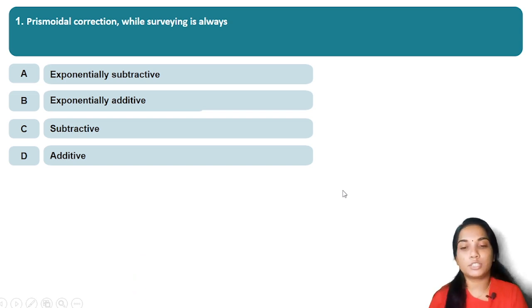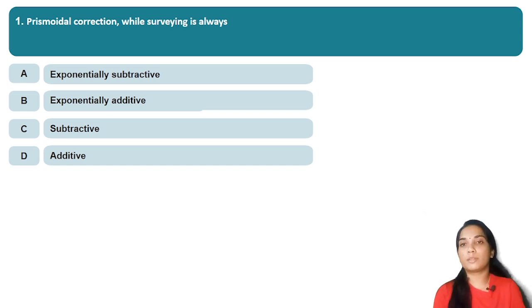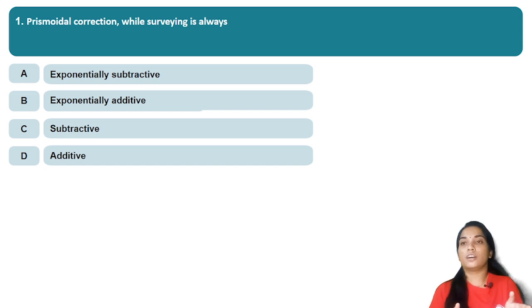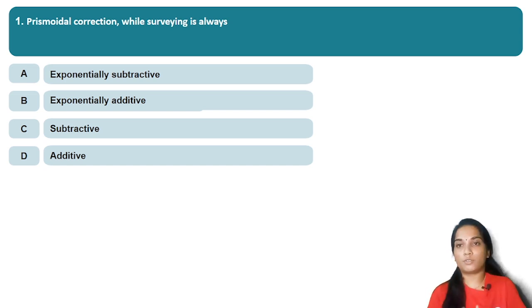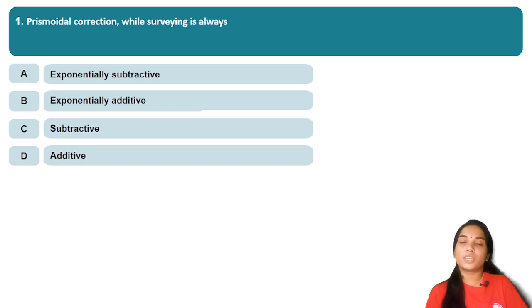The first topic is Prismoidal correction while surveying. What is Prismoidal correction? The Prismoidal method and Trapezoidal method are used for volume and area calculation. The Prismoidal method is also called Simpson's method, and it is accurate. The Trapezoidal method is not as accurate.